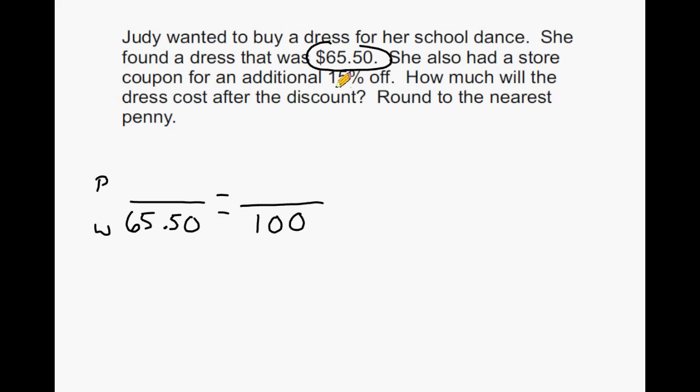Now it says in the problem that she had a coupon for 15% off. But the question is not asking us to figure out how much of a discount that Judy received. The problem is asking us to figure out how much will the dress actually cost after the discount. So instead of writing a 15% for this numerator, I am going to write an 85%. And the reason for this is because that represents the percentage of the entire cost of the dress that we are still, or Judy is responsible for paying.